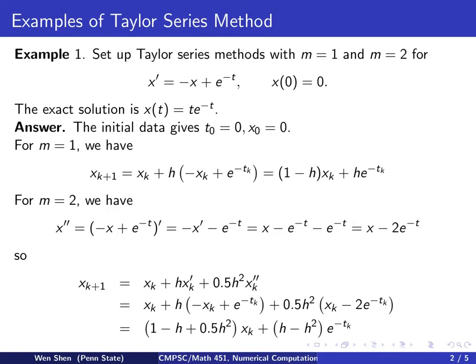So I'll get xk plus h, this becomes negative xk plus e to the negative tk, that's the same as the Euler's method, and then here you put in the x second derivative, so you get xk minus 2 times e to the negative tk. And if you want, you can clean up a little bit, combining the terms with xk together and collect the coefficients, and take the terms with the exponential function and collect the coefficients.